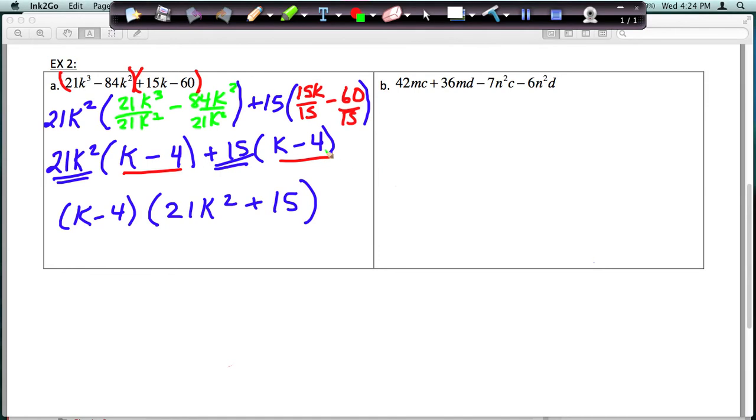So let's try b the same way. This one's going to be a little different, we have to be careful with our negative signs. So I'm going to put the first two together, and the last two together. In the first two, the GCF of 42 and 36 is 6, and then they have an m in common. So I'm going to divide both of these by 6m.